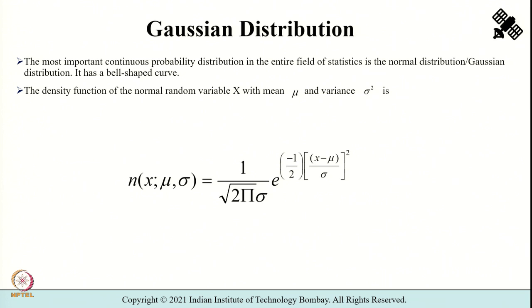The density function of a normal random variable with mean mu and variance sigma squared is given with respect to this expression. Here x is the random variable, mu is the mean, and sigma squared is the variance. Now let us try to understand how to use this to blur an image using the Gaussian distribution.